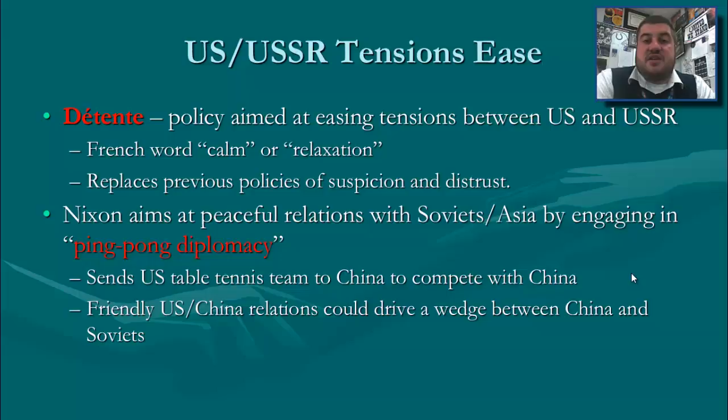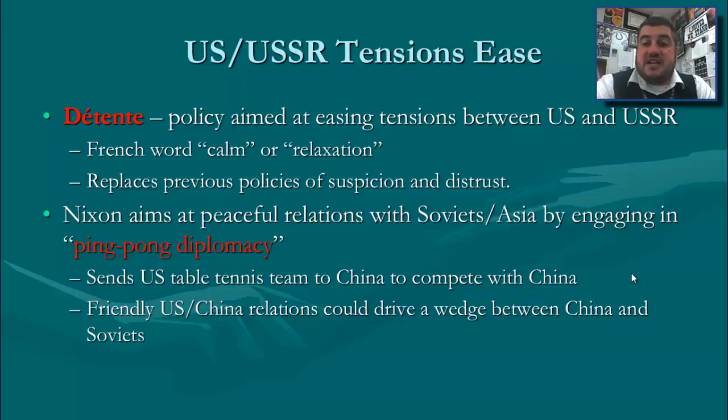The United States and Soviet Union tensions ease, and we enter a period known as détente, which is the French word for calm or relaxing. It means the period of easing tensions between the Soviet Union and United States — basically the 1970s. This replaces previous policies of suspicion and distrust, and it all starts with our relations with China.